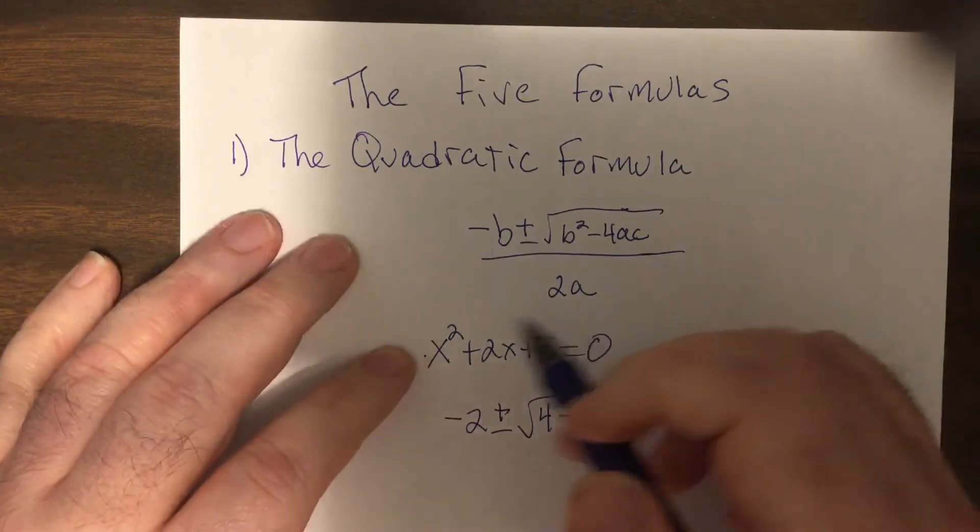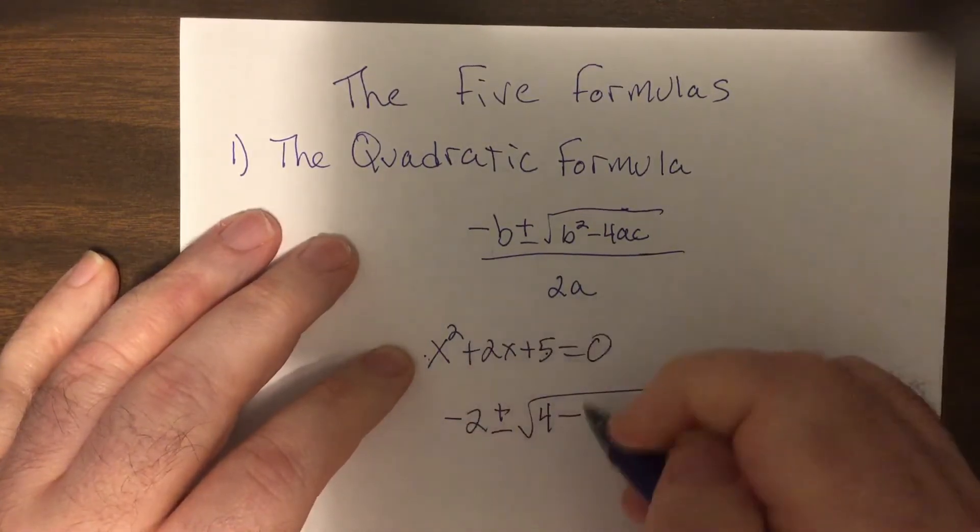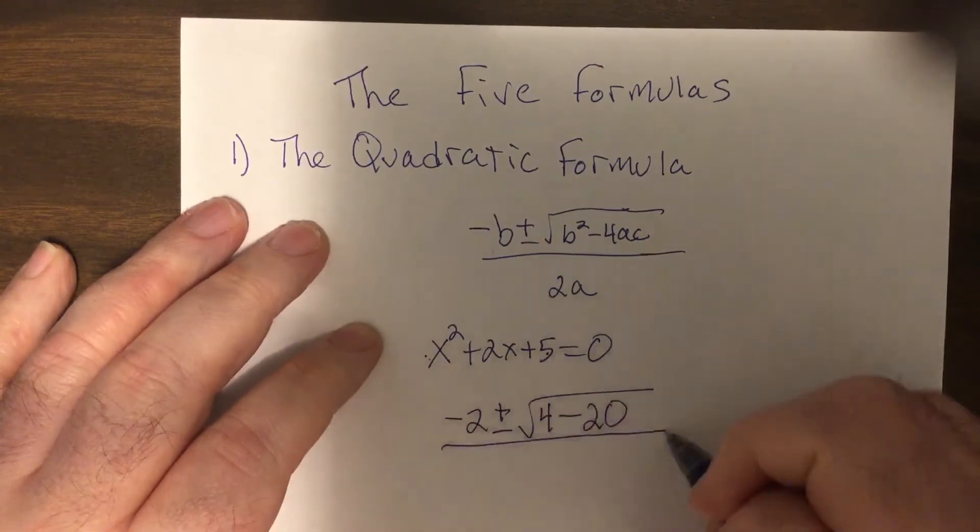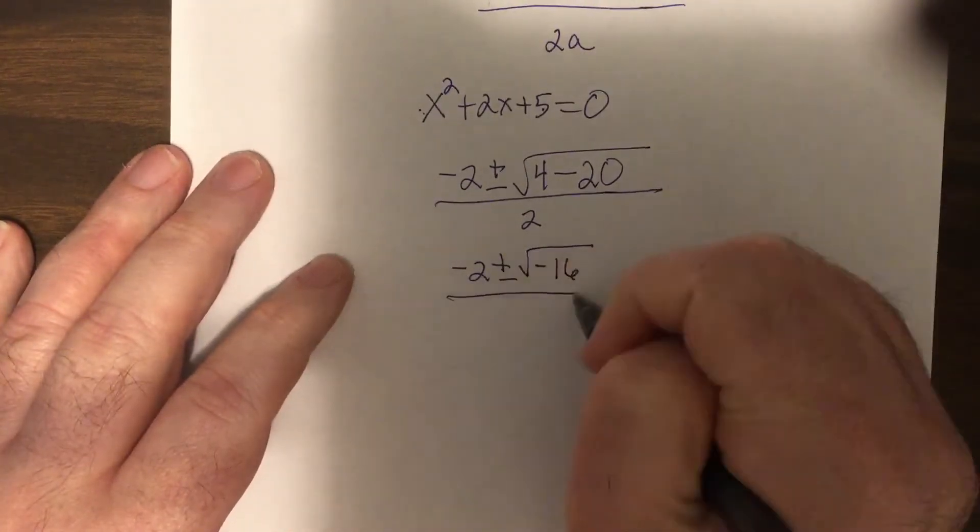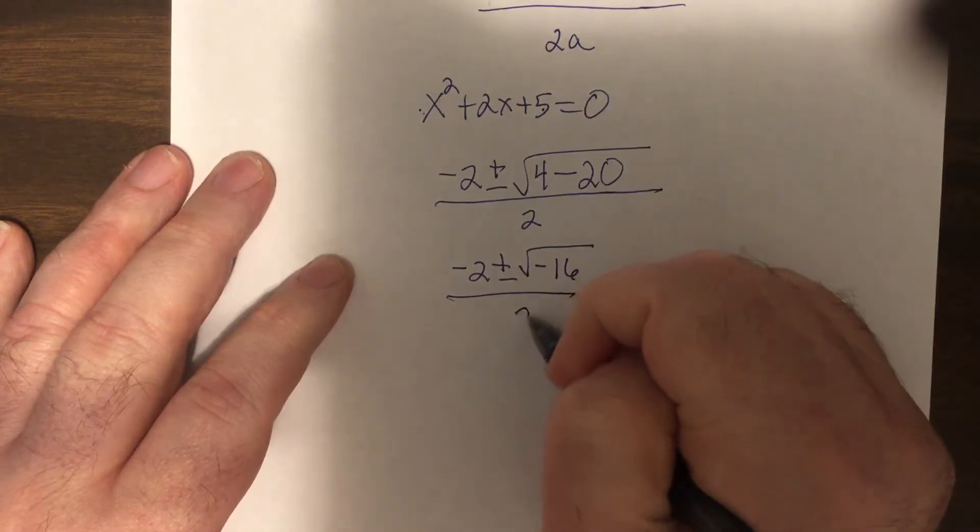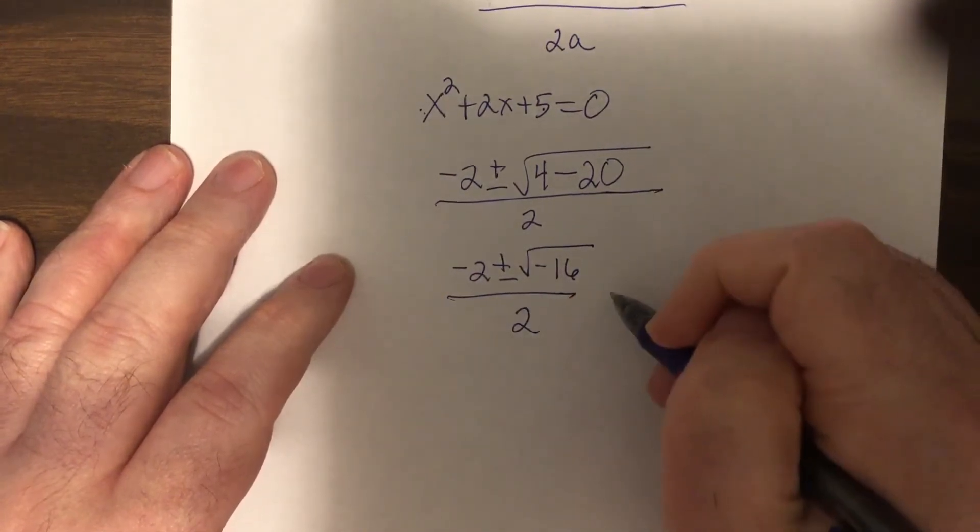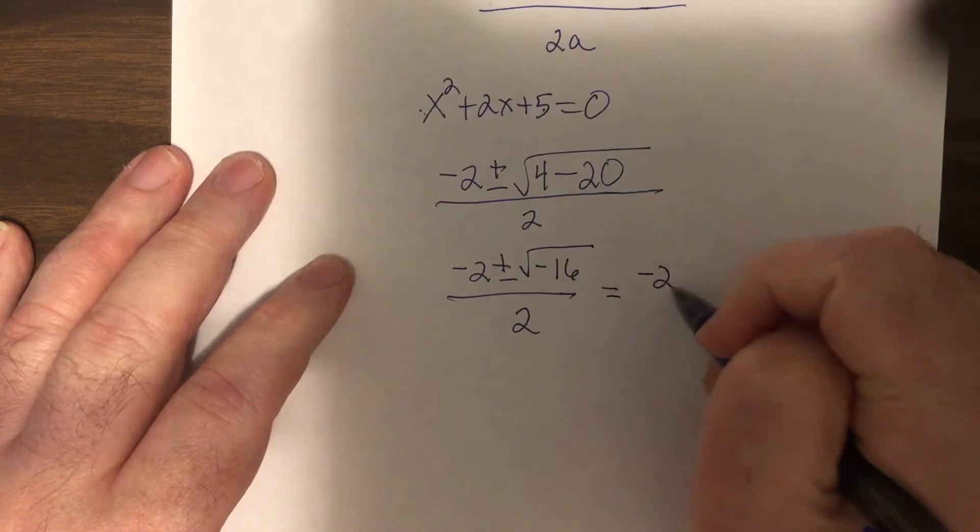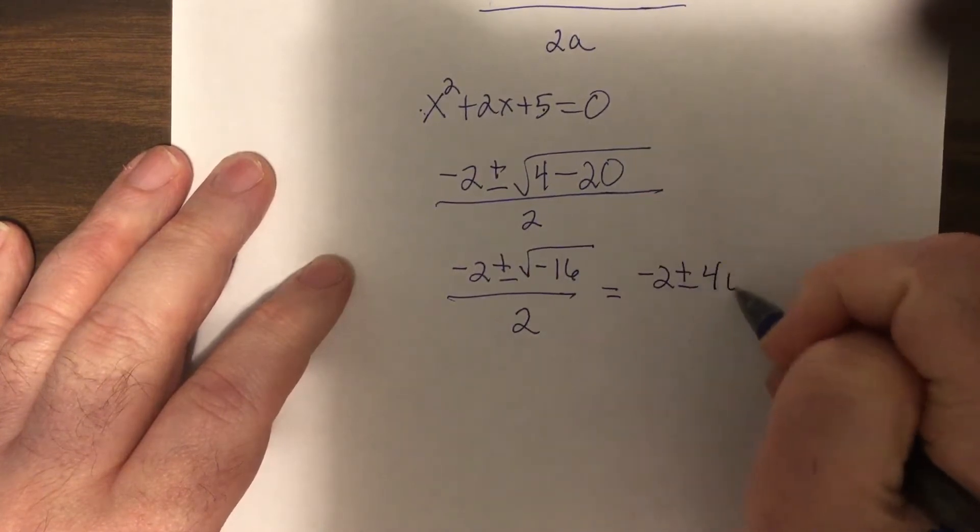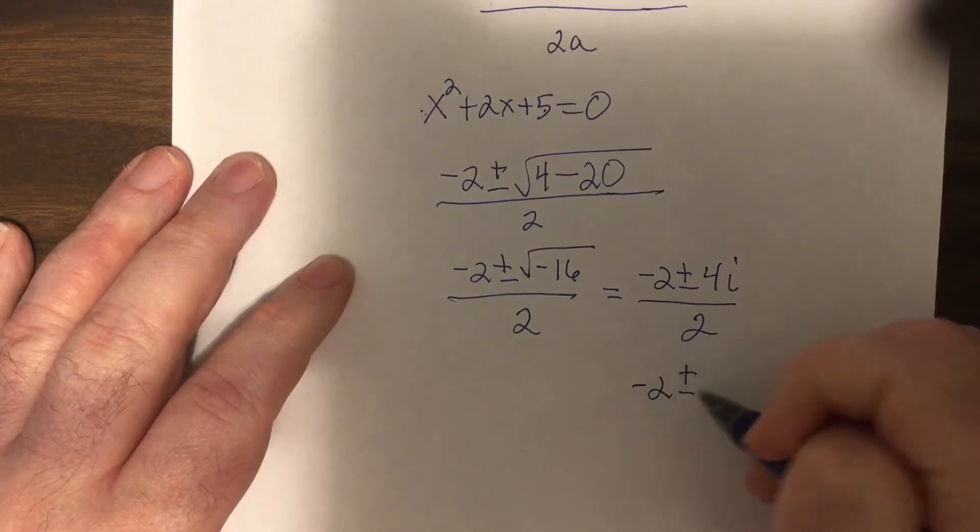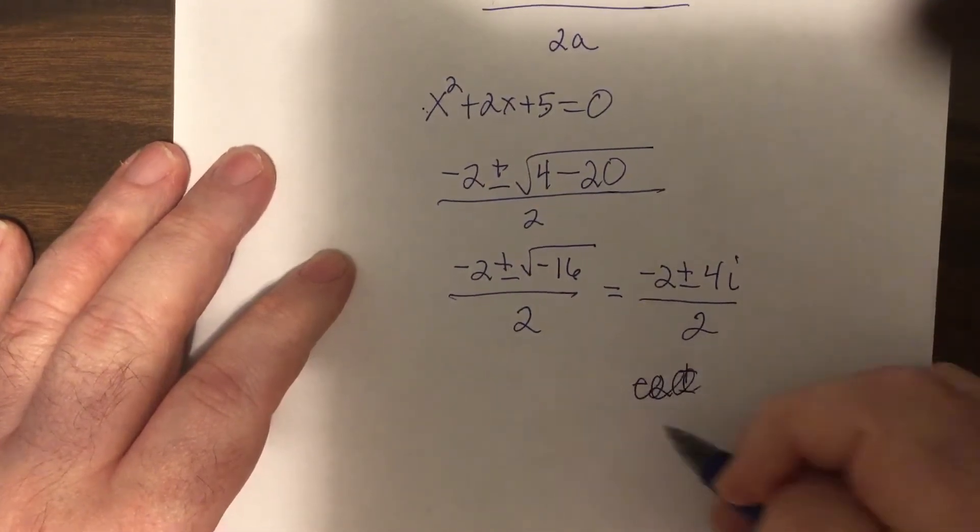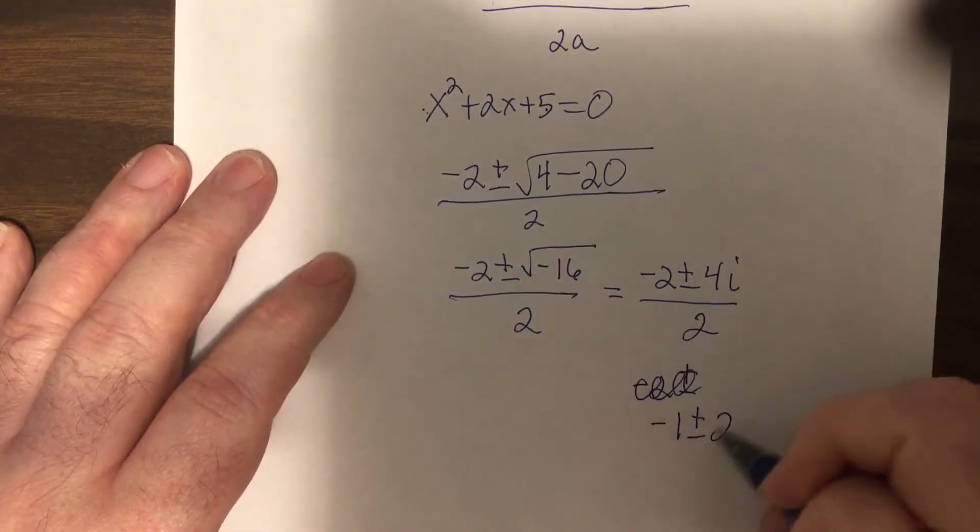4 times a is 1, times c that's 20, all over 2a. So it's negative 2 plus or minus the square root of negative 16, all over 2. That equals negative 2 plus or minus 4i over 2. We can reduce that to negative 1 plus or minus 2i.